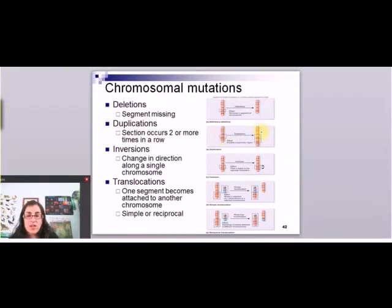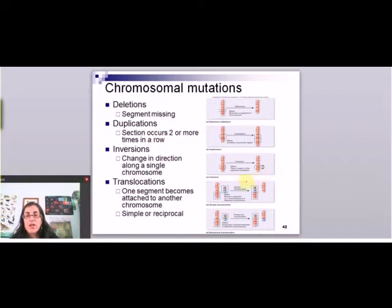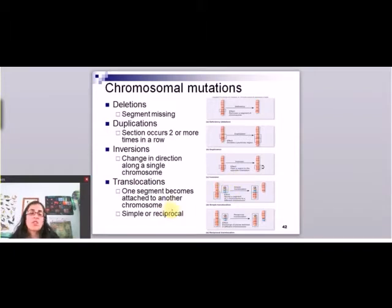A duplication repeats a whole section — that's hundreds or thousands of nucleotides — so the whole chromosome is longer. Inversions are when the chromosome gets rotated: this side got turned the other direction, it got flipped. Even though this is not adding nucleotides, it's changing the direction of them and changing where they are in the chromosome, and so that can change gene expression from that chromosome.